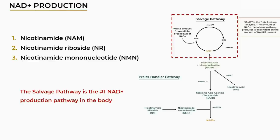Out of all the NAD biosynthesis pathways, the salvage pathway is actually considered to be the primary source of cellular NAD production. This is because, as well as being able to use multiple precursors as raw material — such as nicotinamide, NR, or NMN — it also plays a big role in recycling NAD that is being broken down in the cell.